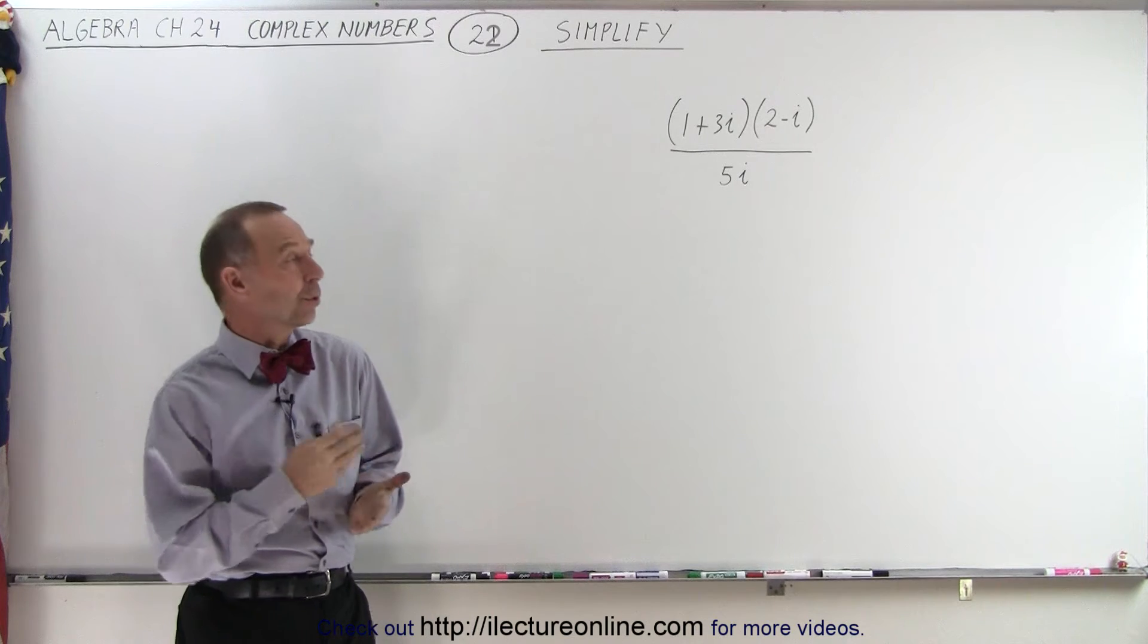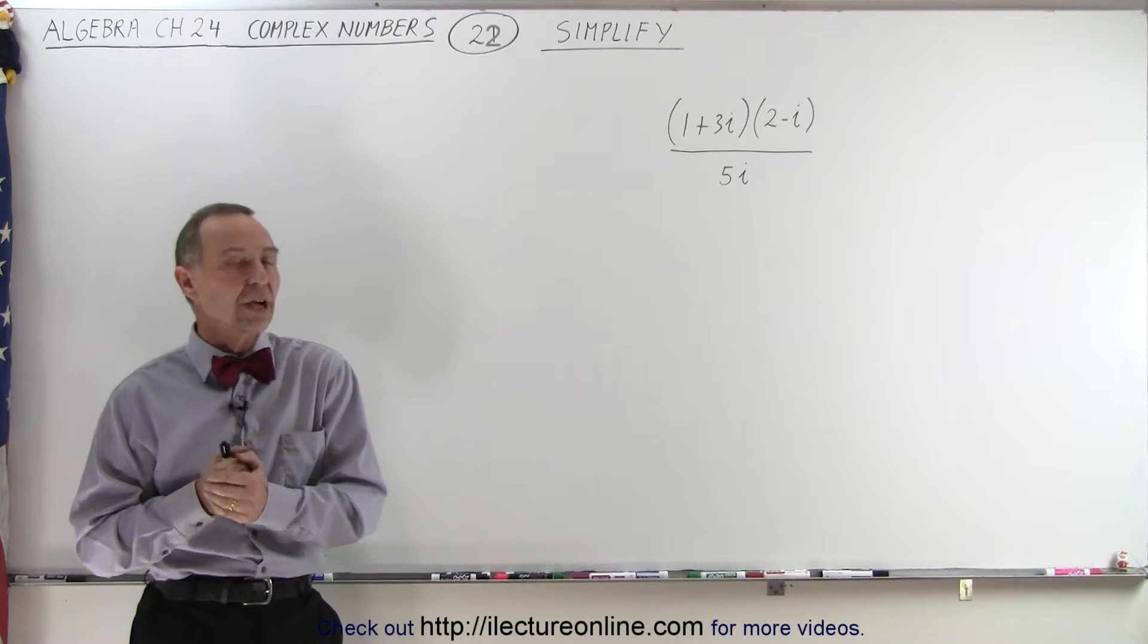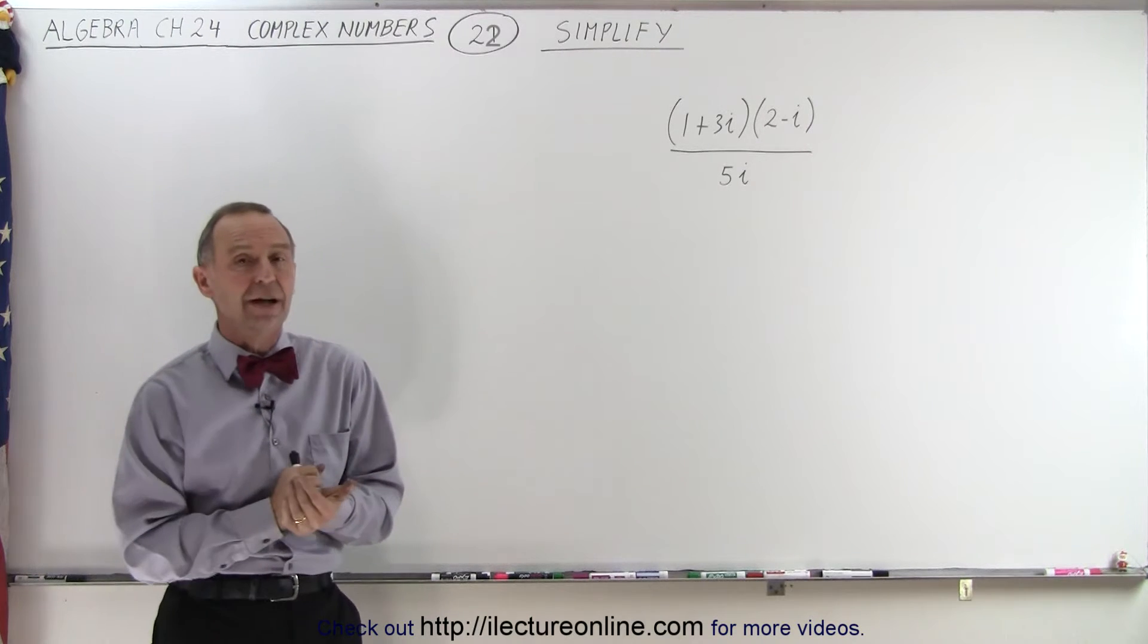But the method will be the same. We're going to multiply both the numerator and the denominator by what we would call the complex conjugate, which means times the negative 5i.